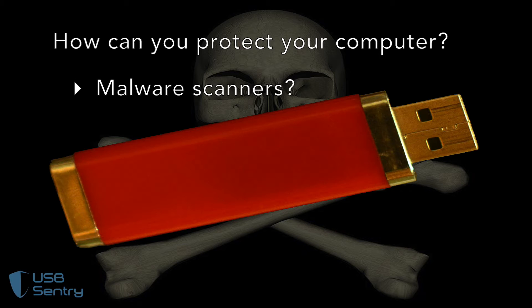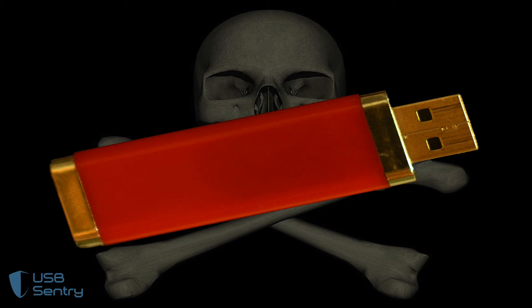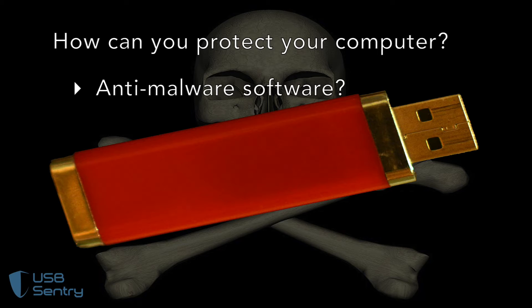So how can you protect your computer? Malware scanners are one possible form of protection. These scanners can often identify malware stored as data on something like a thumb drive, but a malware scanner can't access the firmware of a USB device, and it can't tell if the device is malicious. Therefore, it can't actually protect against USB-delivered attacks. Anti-malware software also can't defend against protocol-level attacks. There are a few software products that try to provide USB security, but they are easy to defeat and largely ineffective against protocol-level attacks.